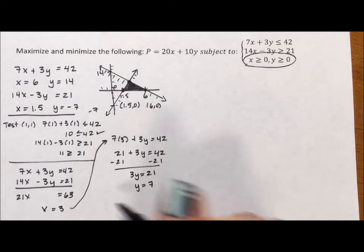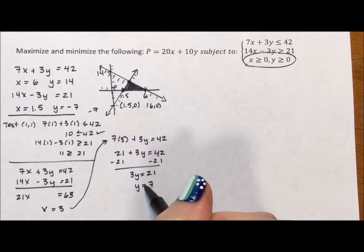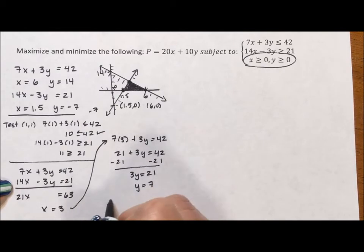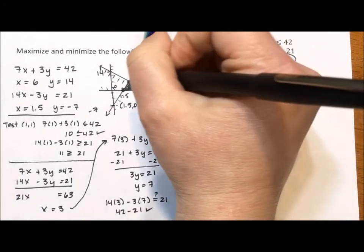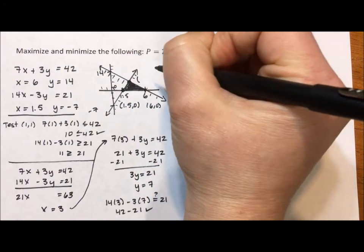Now I want to know if that ordered pair (3, 7) works in my second line. So is 14 times 3 minus 3 times 7 really equal to 21? 42 minus 21, yes. Which means this corner is (3, 7).